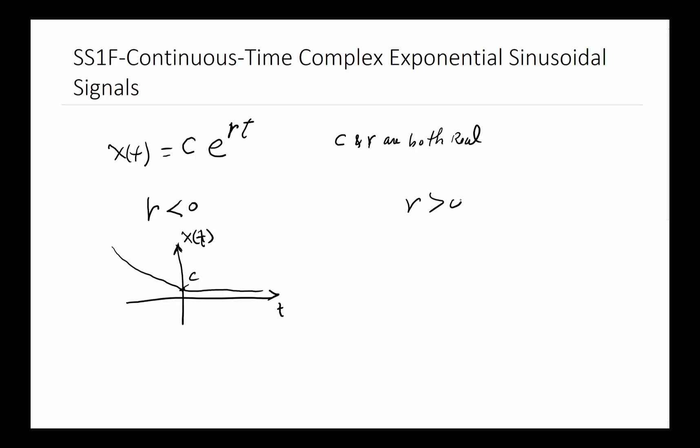Now if r is equal to zero, the answer is just a flat line at c. But if r is greater than zero, then we have a case where it starts from minus infinity, goes through here, and eventually goes to infinity. This is x(t) over here and this is t, and the cross point is at zero. So that's the simplest form, when both c and r are real.